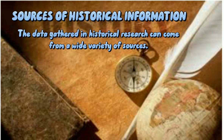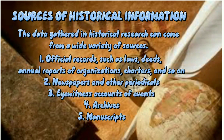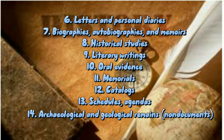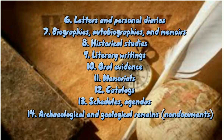Sources of Historical Information: The data gathered in historical research can come from a wide variety of sources: 1. Official records, such as laws, deeds, annual reports of organizations, and charters. 2. Newspapers and other periodicals. 3. Eyewitness accounts of events. 4. Archives. 5. Manuscripts. 6. Letters and personal diaries. 7. Biographies, autobiographies, and memoirs. 8. Historical studies. 9. Literary writings. 10. Oral evidence. 11. Memorials. 12. Catalogues. 13. Schedules and agendas. 14. Archaeological and geological remains (non-documents).